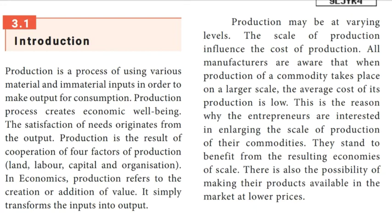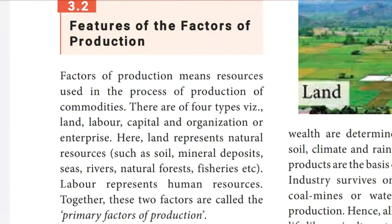Next, we will discuss features of the factors of production. Human activity can be broken down into two components: production and consumption. When there is production, a process of transformation takes place. Inputs are converted into an output. The inputs are classified and referred to as land, labor and capital. Collectively, the inputs are called factors of production.